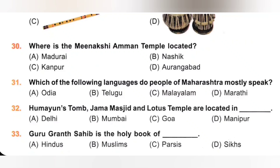31st. Which of the following languages do people of Maharashtra mostly speak? A. Odia, B. Telugu, C. Malayalam, D. Marathi. Odia, Telugu and Malayalam are spoken by people of Odisha, Andhra Pradesh and Kerala respectively. The people of Maharashtra speak Marathi. Option D, Marathi, is the correct answer.